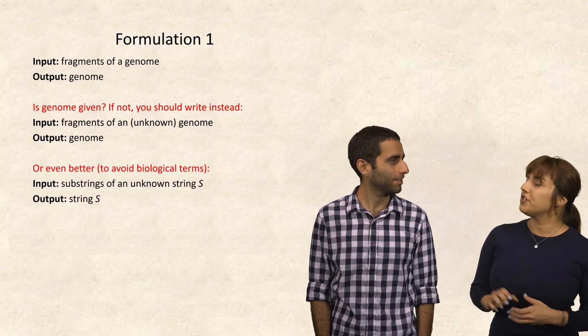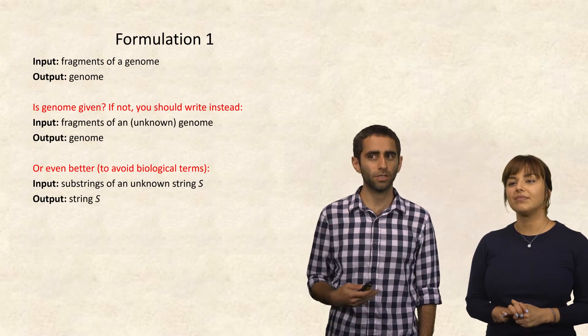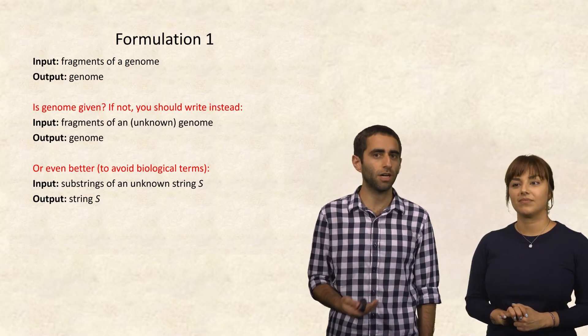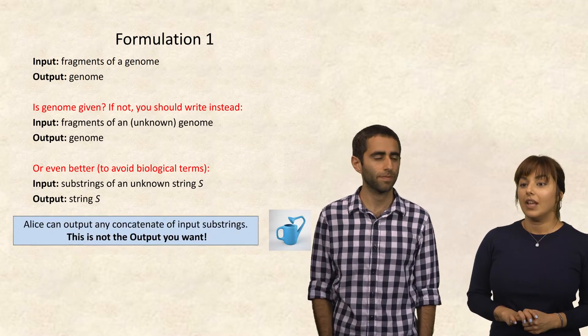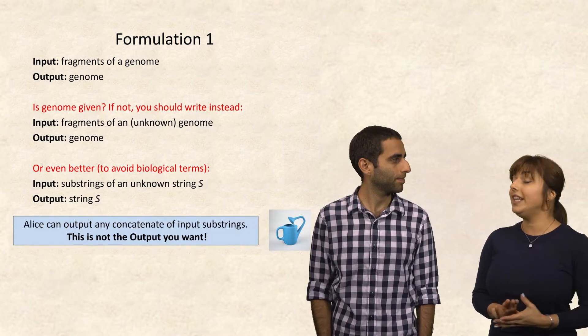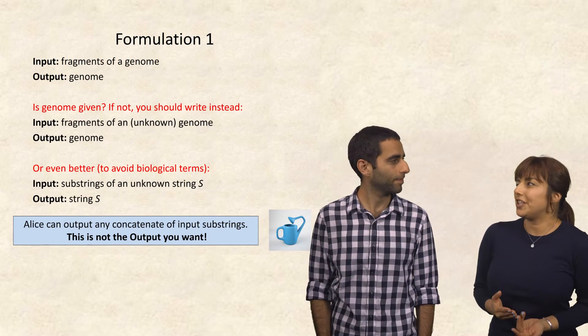It's good to avoid the biological term. So what about if the input was substrings of an unknown string S, and the output was that string S? Now Alice can output any concatenate of input strings. This is not the output that you're looking for.